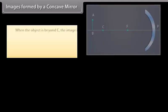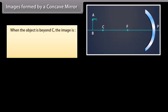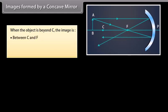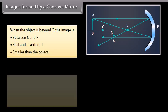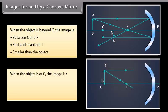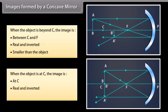Images formed by a concave mirror: When the object is beyond C, the image is between C and F, real and inverted, and smaller than the object. When the object is at C, the image is at C, real and inverted, and the same in height as the object.